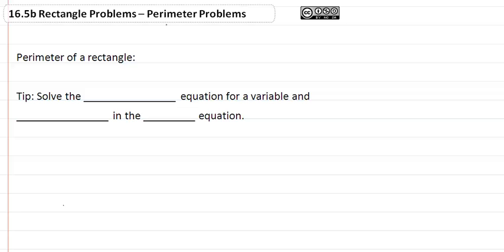16.5b Rectangle Problems and Perimeter Problems. Recall that the perimeter of a rectangle is P equals 2L plus 2W, and area is equal to the length times the width, or L times W.